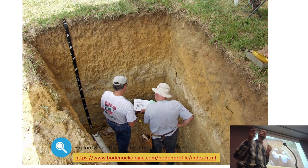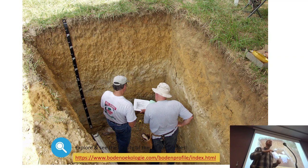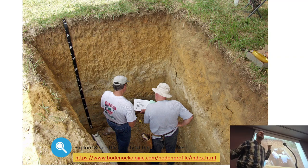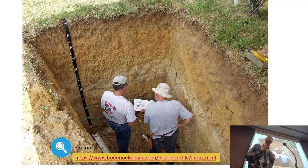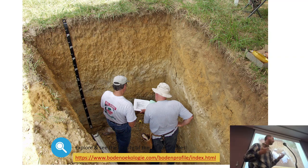Then you take some samples, check the Munsell chart, and record those colors, noting subtle changes happening in that profile. Start by assuming all the horizons are horizontal, even if they're not exactly horizontal. You then start lining up those horizons and analyzing them — first by color, then by texture by feel. You look for changes between the top layer and subsequent layers: is it more sandy, more clay, more silt?